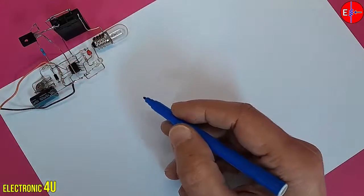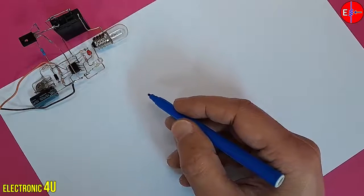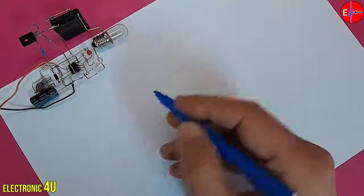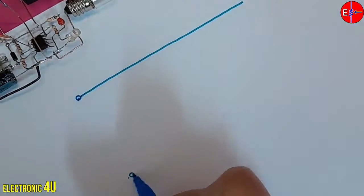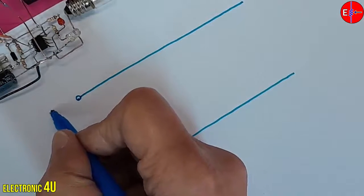To draw the schematic diagram of the circuit, I designate one line as positive voltage and another line as zero volts. In this circuit, a 12-volt voltage is used.